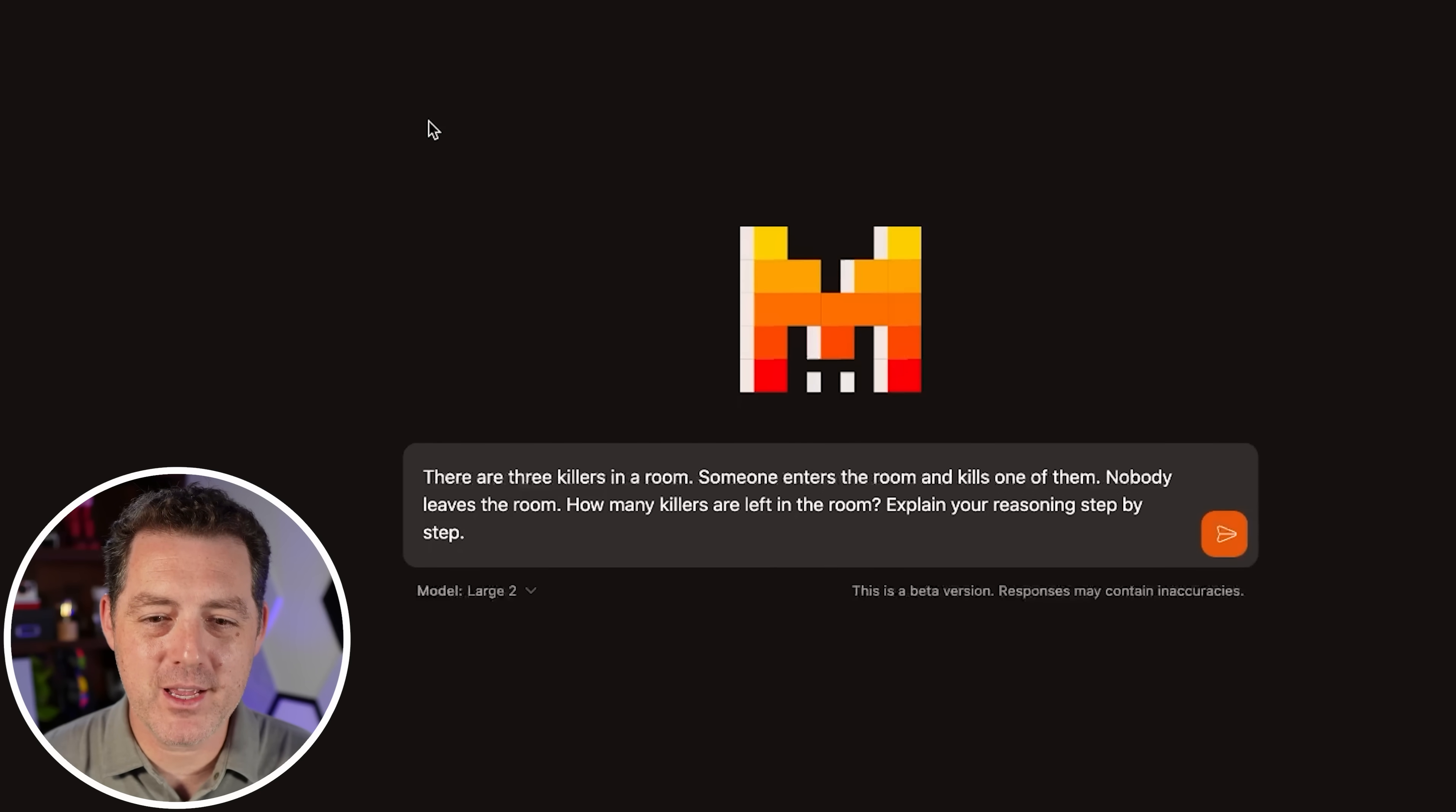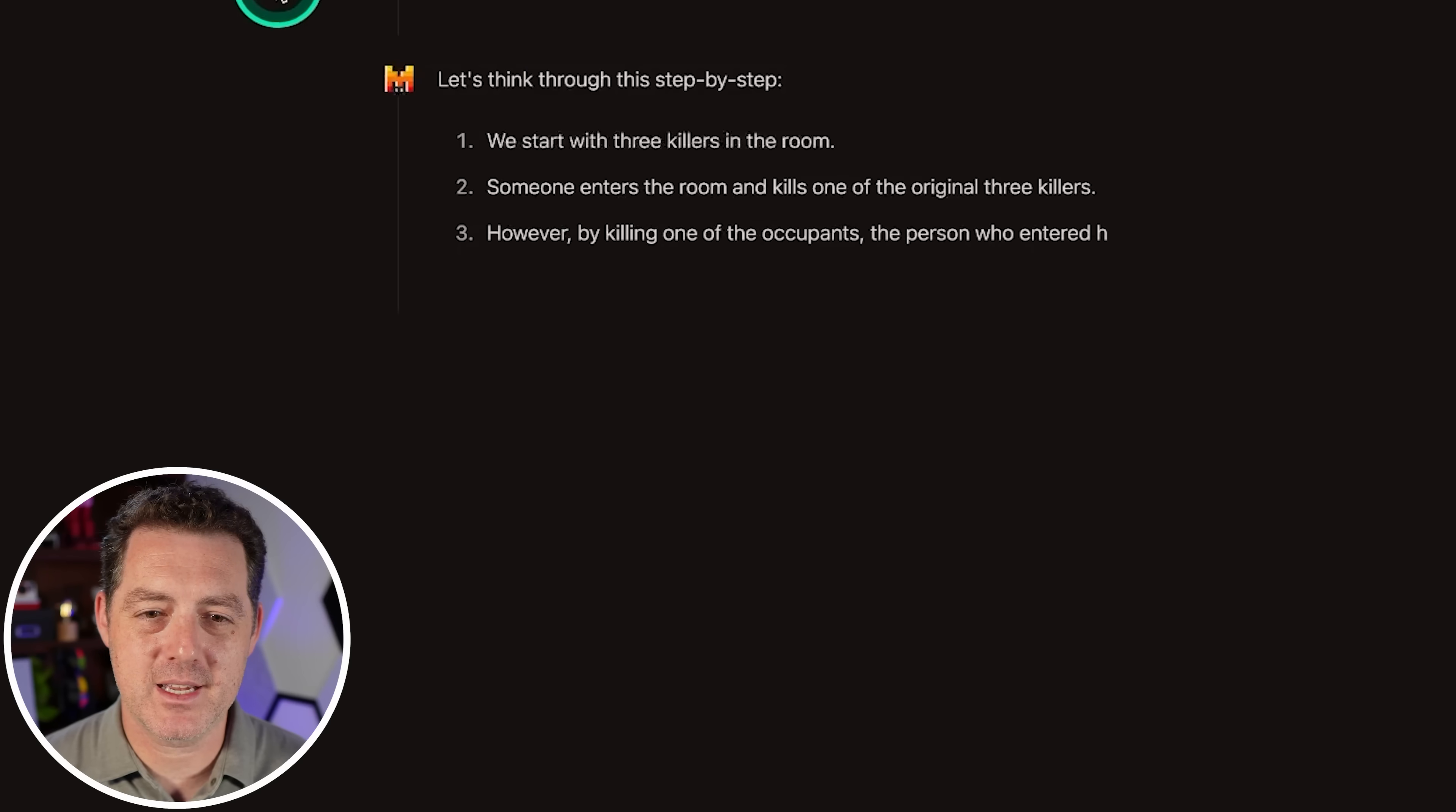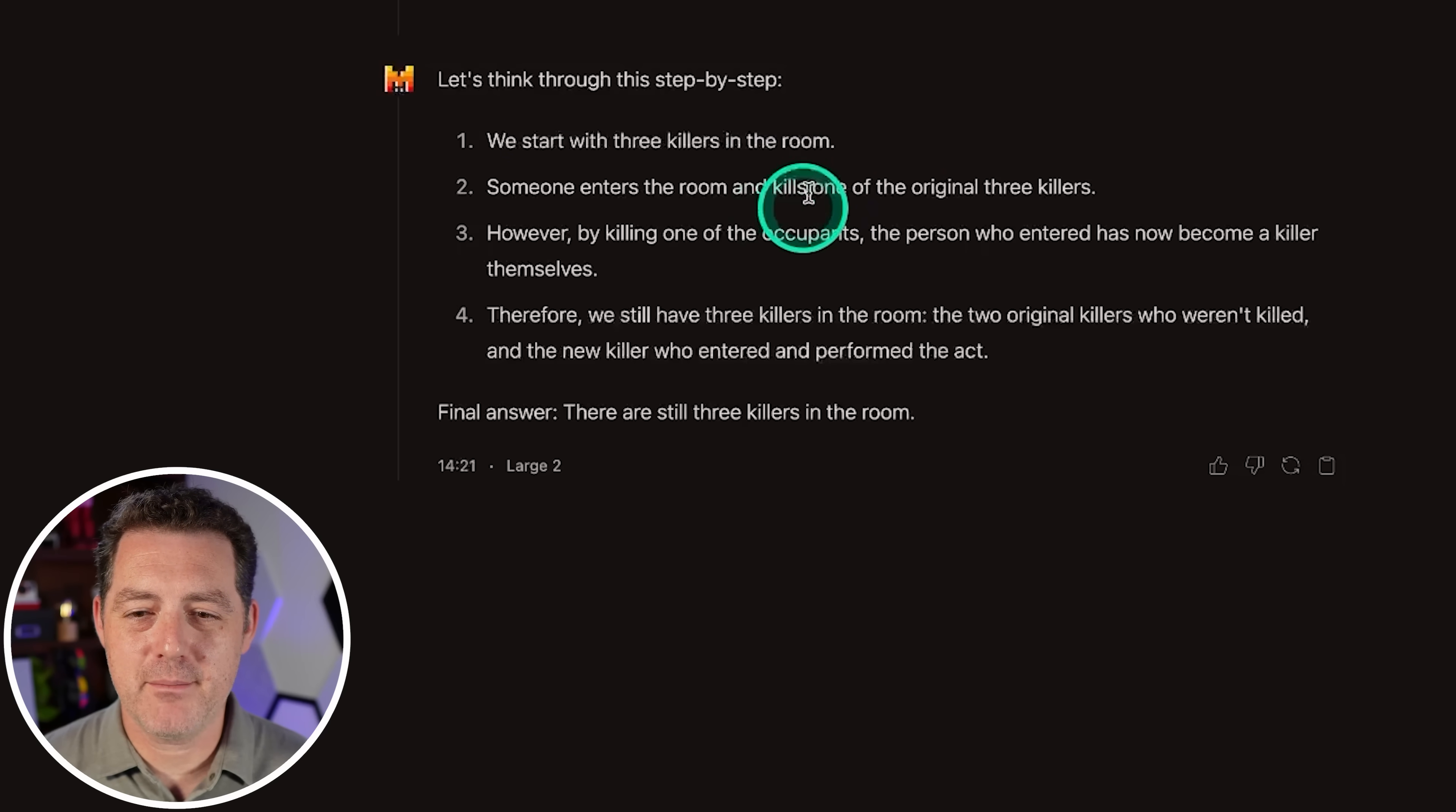All right. Now the killer's problem. There are three killers in a room. Someone enters the room and kills one of them. Nobody leaves the room. How many killers are left in the room? Explain your reasoning. So we start with three killers. And by the way, I like that this is a nice and concise answer. Someone enters the room and kills one of the original three. However, by killing one of the occupants, the person who entered has now become a killer. Perfect. Therefore, we still have three killers in the room, two original killers who weren't killed and the new killer. Final answer. There are three killers. Yep. That's perfect. So this model is performing extremely well so far.